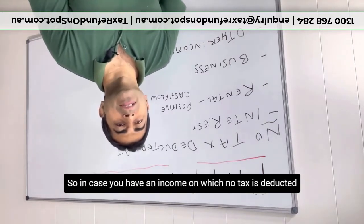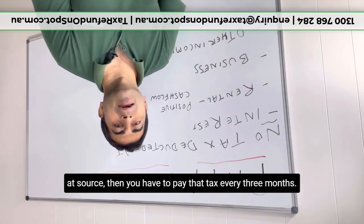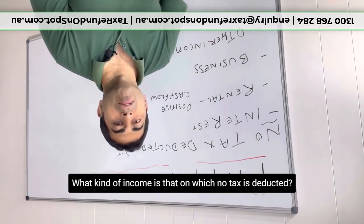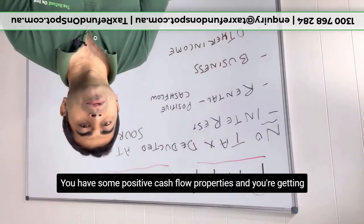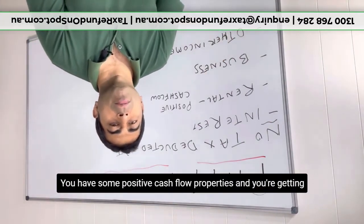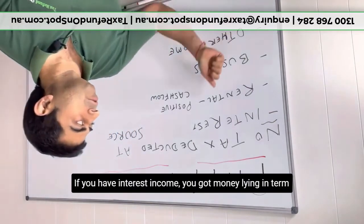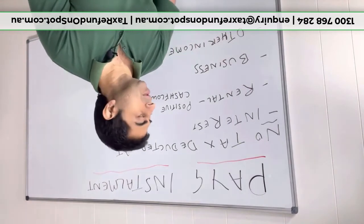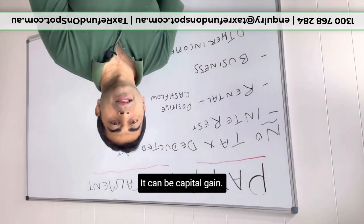What kind of income is that on which no tax is deducted? It can be rental income. You have some positive cash flow properties and you are getting rent from there. If you have interest income, you got money lying in term deposit or online saver. It can be business income or any other kind of income. It can be capital gain.